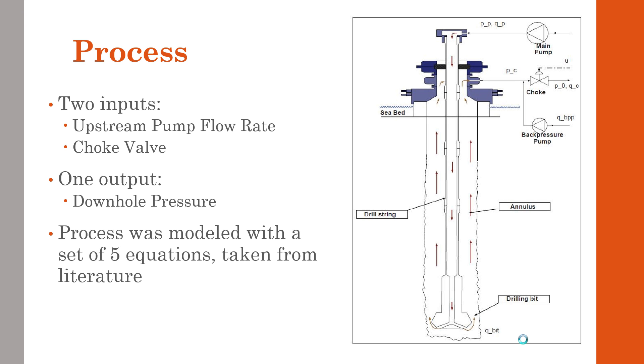As you can see on the right is a brief diagram of the drilling process. The two manipulated variable inputs were the upstream pump flow rate and the choke valve in order to control the downhole pressure. We modeled our process using a set of five equations taken from literature, primarily based on material balances and the mechanical energy balance.